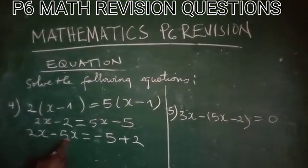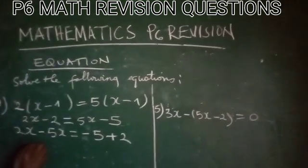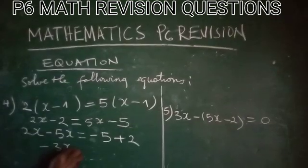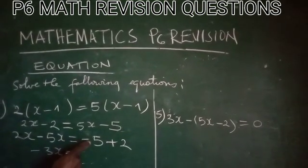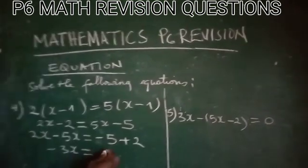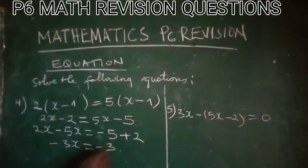Thus, 2x minus 5x will be equal to negative 3x, which is equal. Negative 5 plus 2 is equal to negative 3.